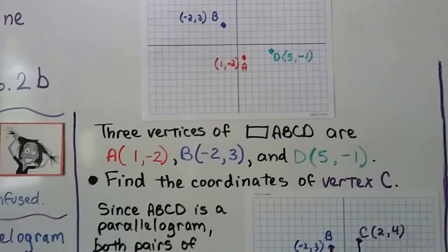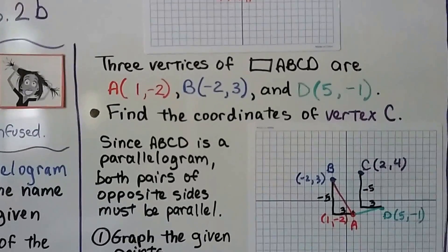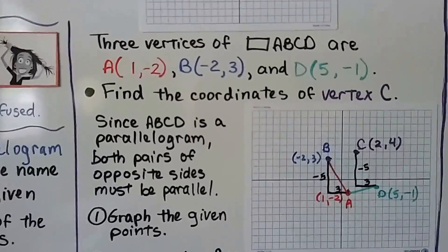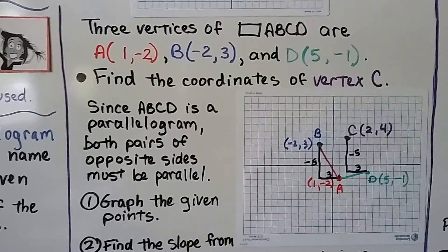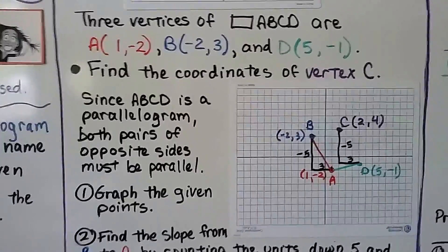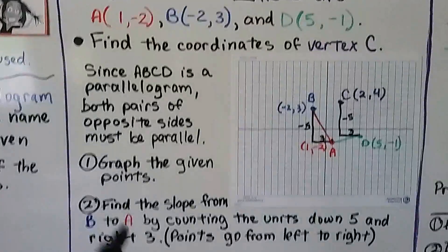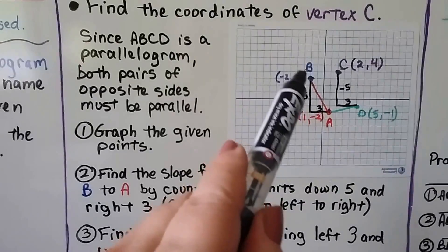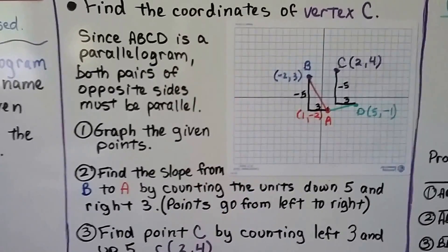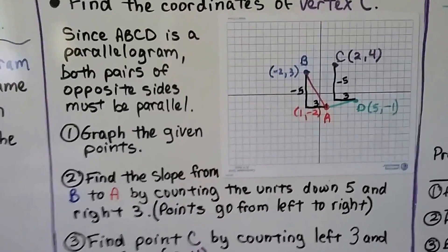Well, since ABCD is a parallelogram, both pairs of opposite sides must be parallel. That's according to the definition. We graph the given points, and we get this, and then we find the slope from B to A by counting the units down 5 and right 3.